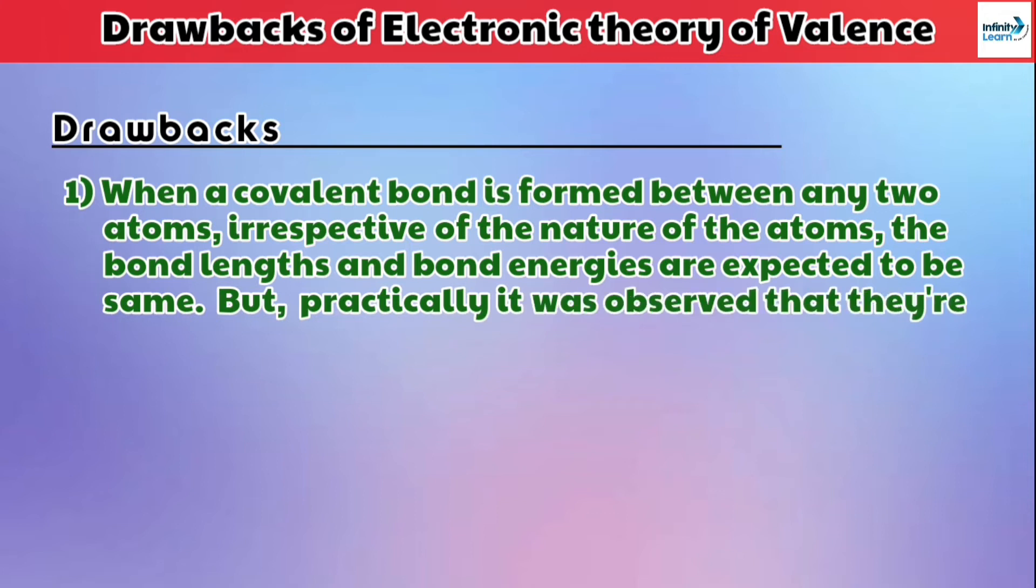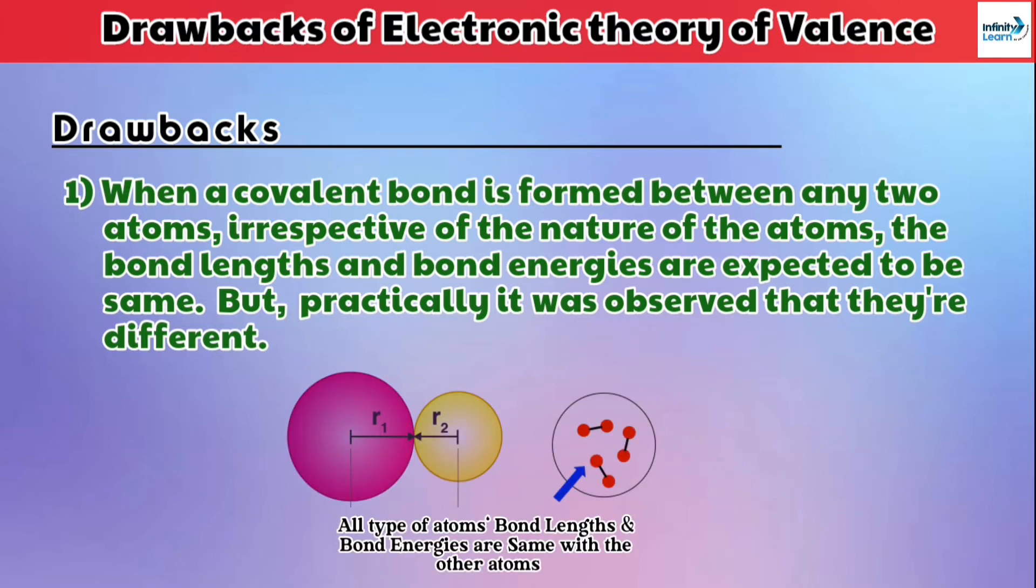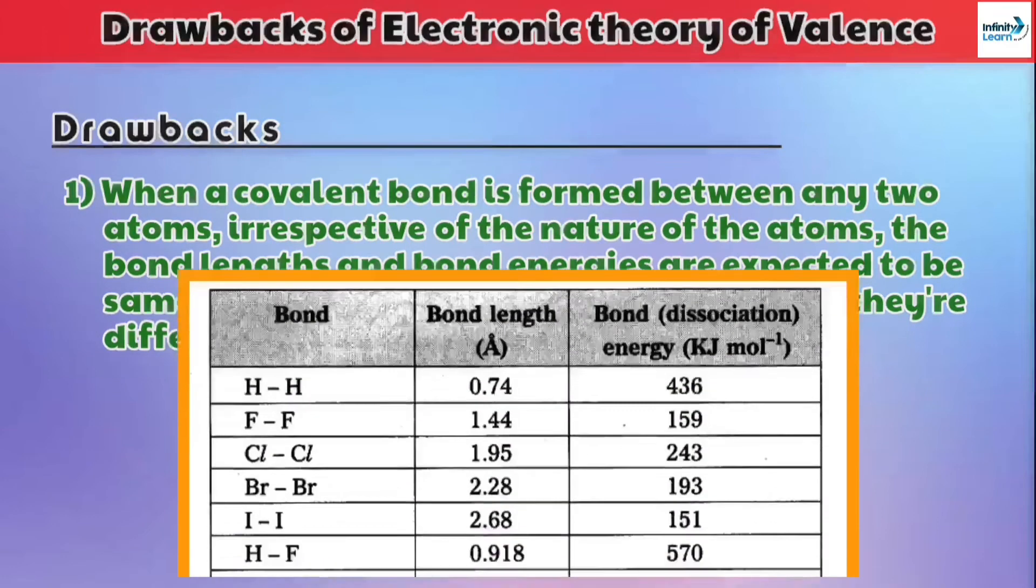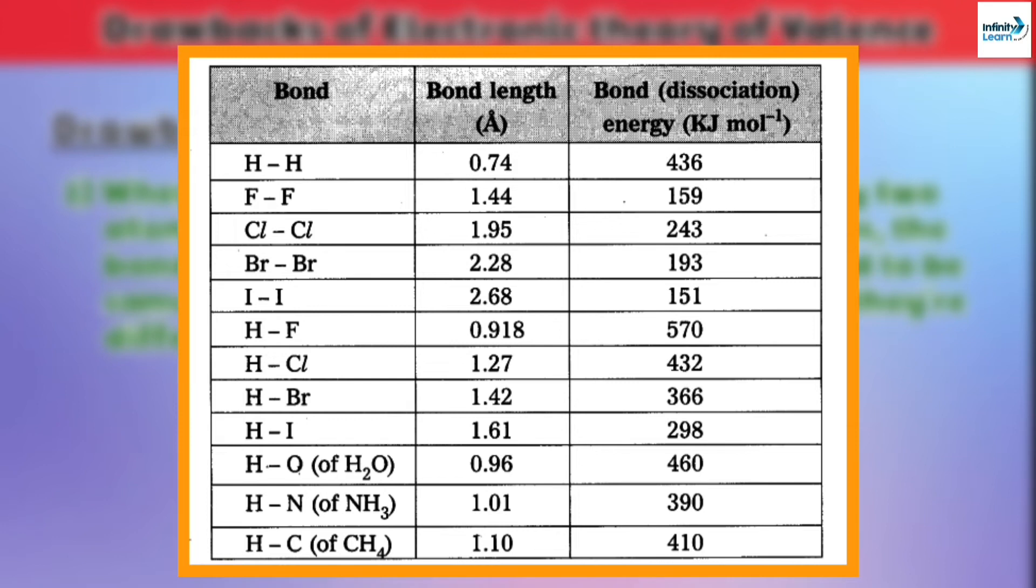But practically it was observed that they are different. This simply means, in the electronic theory of valence, it was said that if any two atoms combine to form a covalent bond, then their bond lengths and bond energies will be same. But when practical experiments occurred, it was found that the bond lengths and bond energies of different elements' atoms are not same—they are different from each other. Here is a table with some bonds and their bond lengths and bond energies.